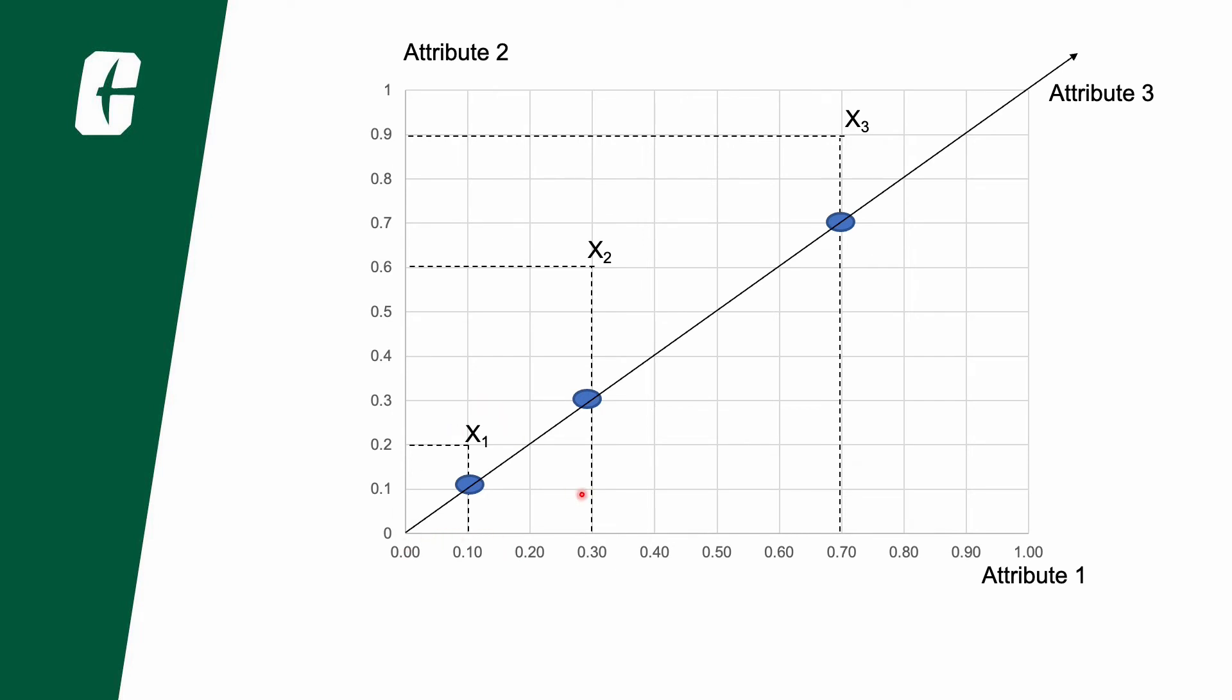Let's consider object x1. For object x1, the values taken are 0.1 and 0.2 and similarly for objects x2 and x3. I've plotted them in the graph. This is the z coordinate, to the x coordinate we have attribute 1 and the y coordinate we have attribute 2.